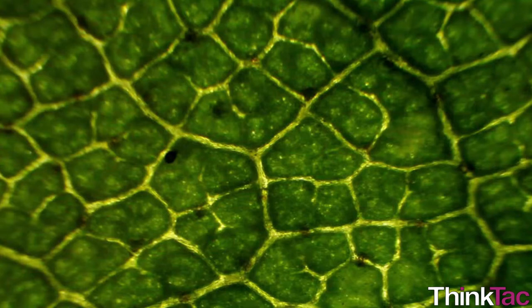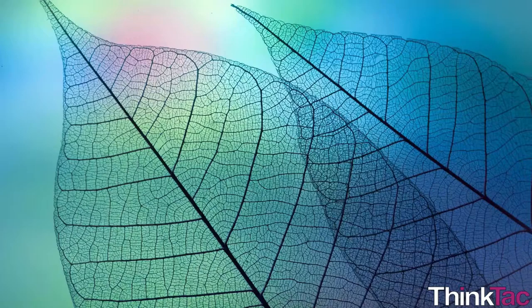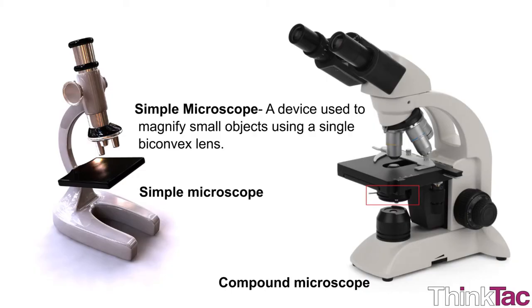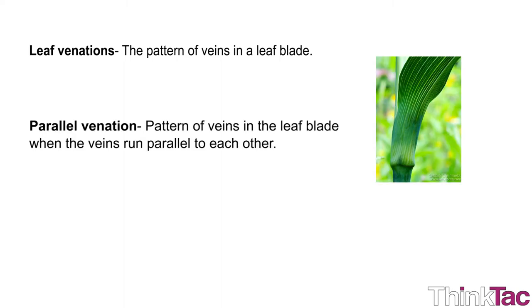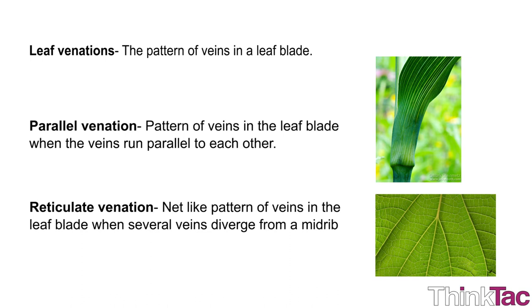Microscopy makes it possible for us to look at very small structures with great detail. Some scientific terms: a simple microscope is a device used to magnify small objects using a single biconvex lens. Leaf venation is the pattern of veins in a leaf blade. Parallel venation is a pattern of veins in the leaf blade when the veins run parallel to each other. Reticulate venation is a net-like pattern of veins in the leaf blade when several veins diverge from a midrib.